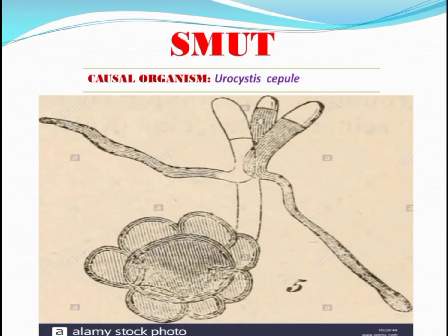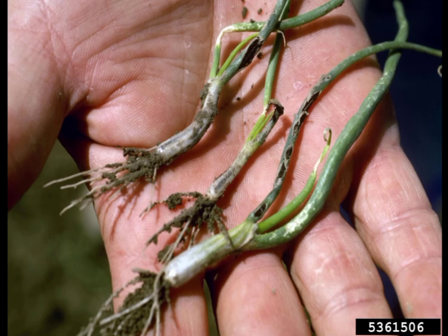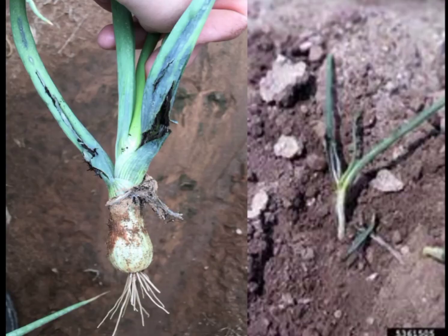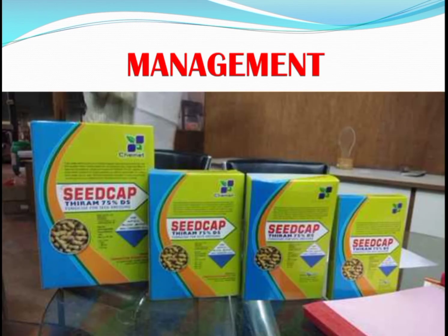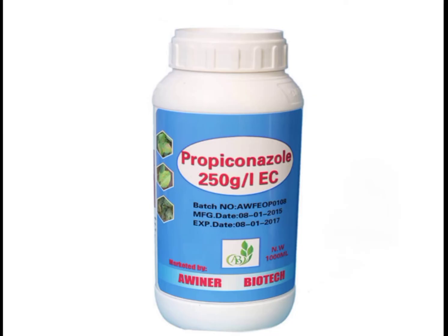The next disease is Smot, which is caused by soil-borne fungi Urocystis cepulae. Symptoms: The symptoms appear on cotyledons and young leaves as longitudinal blisters that are blackish with a silvery sheen. Seedlings often die before or within six weeks after emergence. Developing bulbs become covered by blackish lesions and are predisposed to infection by other organisms that cause secondary rots. When the skin of the blister splits, fungal spores are released into the soil where they remain infectious for many years. Favorable Condition: Infection is favored by cold, damp weather in spring which delays emergence. Disease Cycle: Primary source of infection is spore balls in soils and seed bulbs. Secondary source of infection is wind-blown soil, surface drainage water, onion bulbs, and onion transplants. Management: Treat the seeds or bulbs with thiram or carboxin at 3g per kg. Avoid monocropping and drench patches with carboxin at the rate of 0.1% or propiconazole at the rate of 0.1%.